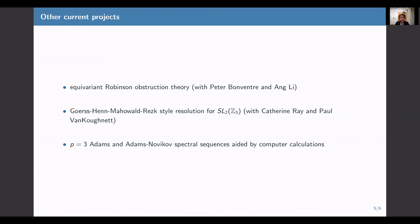I'll just list a few of my ongoing projects. So first, with Peter Bonventry and Ang Li, I'm working on developing an equivariant Robinson obstruction theory. Secondly, Catherine Ray, Paul VanKoughnett, and I have developed a Goerss-Mahowald-Rezk-style resolution for SL2 of Z/3. The goal here is to compute SL2 of Z/3 cohomology of some interesting modules, possibly related to the moduli of elliptic curves.